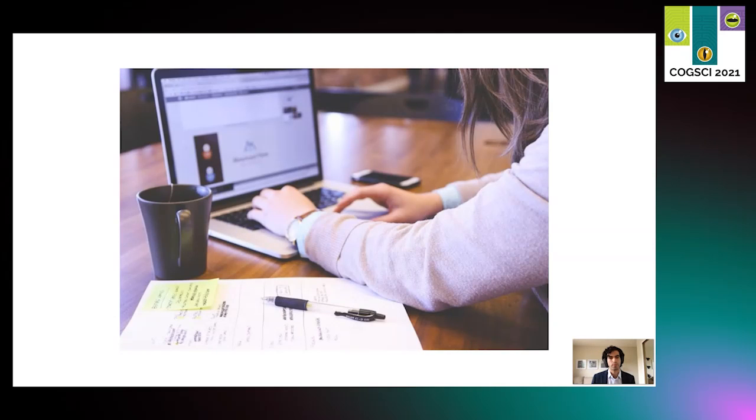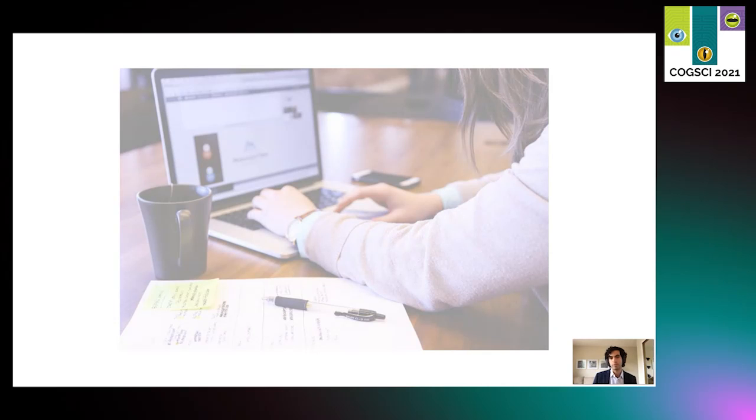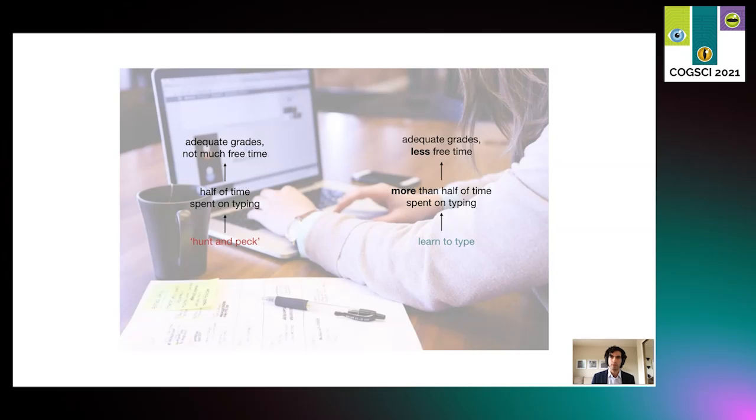Consider the following dilemma. A student must decide between continuing to type with their index fingers, that is, hunting and pecking, or learning how to type properly. Hunting and pecking means that they will spend maybe half of their time on typing. They will get adequate grades, but they will not have much free time. Learning to type means, paradoxically, that they will spend more than half of their time on typing. They will have adequate grades, but they will have even less free time. However, choosing to learn will lead to an improvement at typing. And eventually, better typing will mean less than half of their time spent on typing. Perhaps better grades, because they can spend more time on the content of their assignments, and actually more free time.